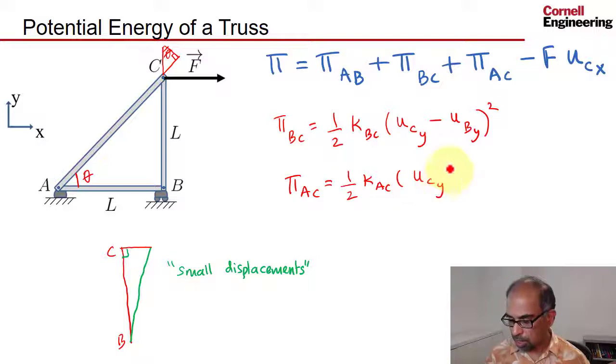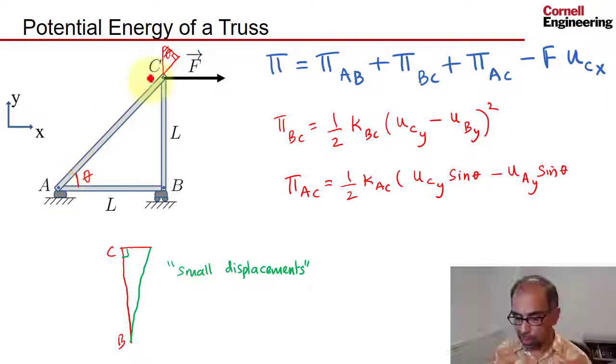If this is theta, then you can show from trigonometry that that's theta, and so you see U_CY sin θ. Only part of the displacement of pin C in the vertical direction will affect AC, and you have to subtract out what pin A is doing when it moves in the vertical direction.